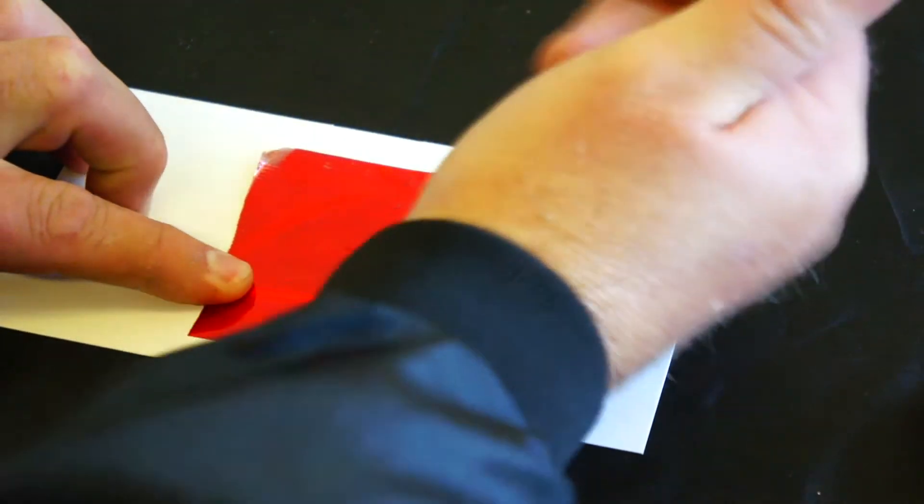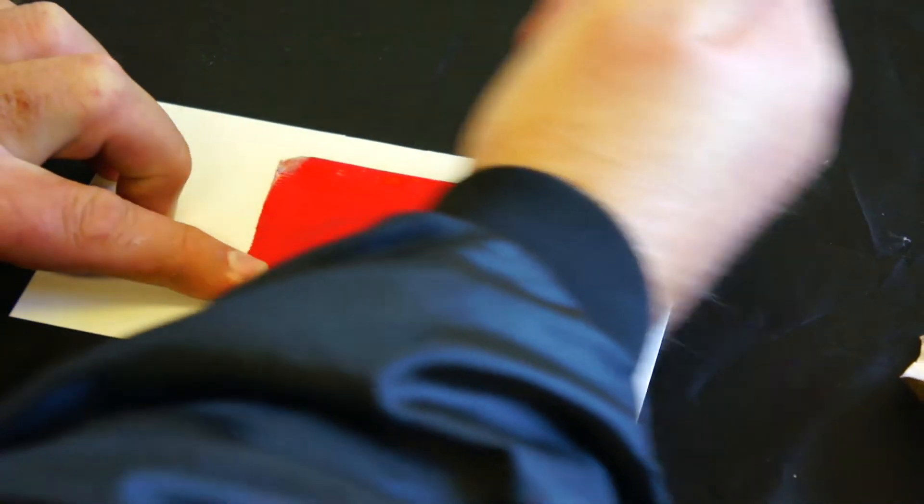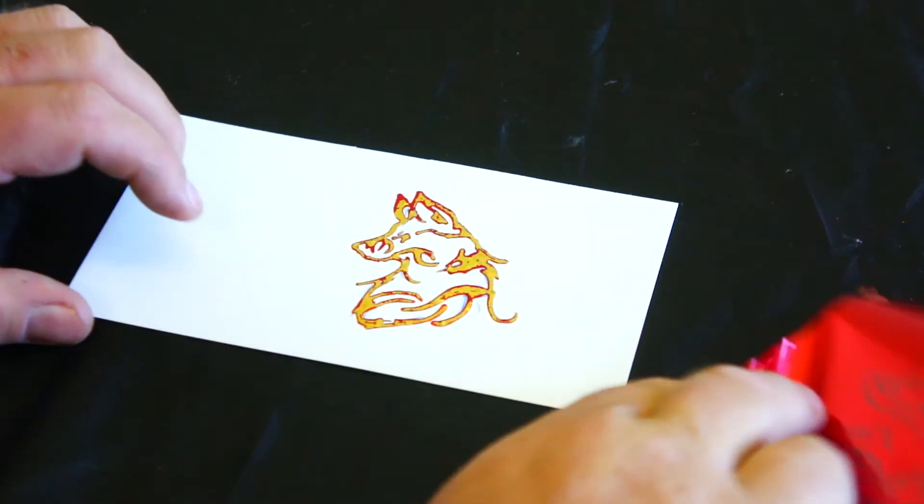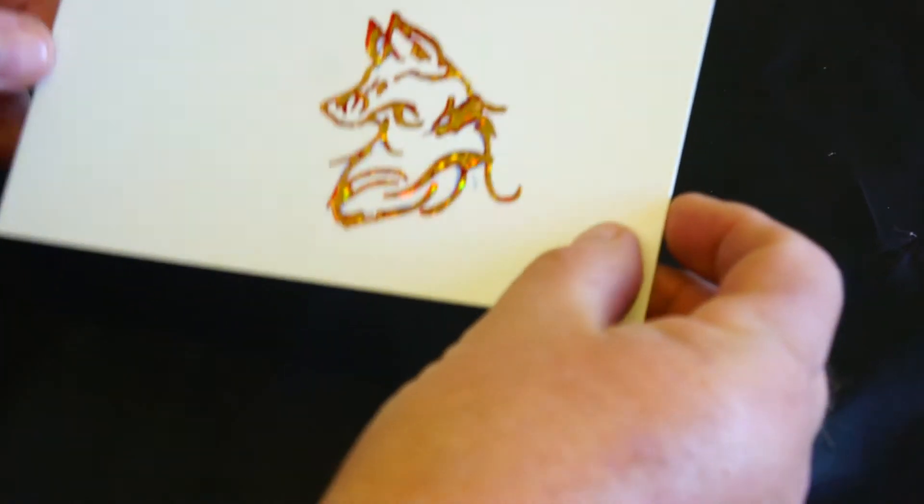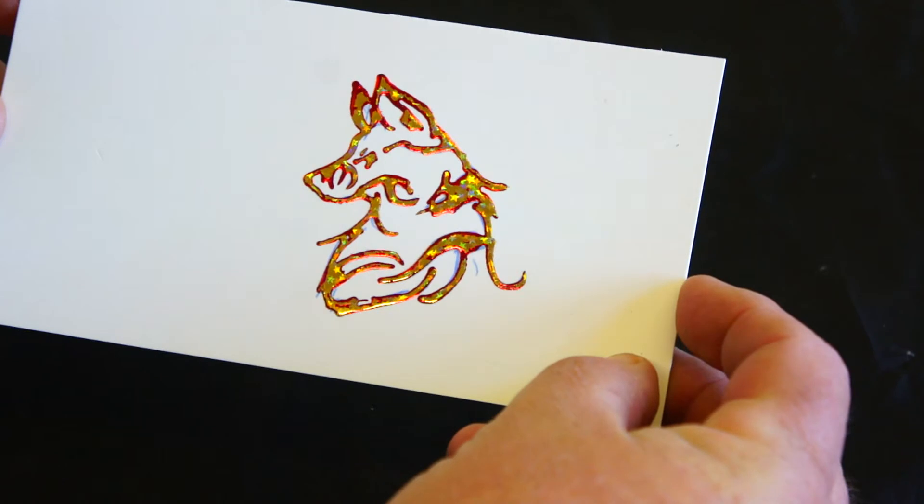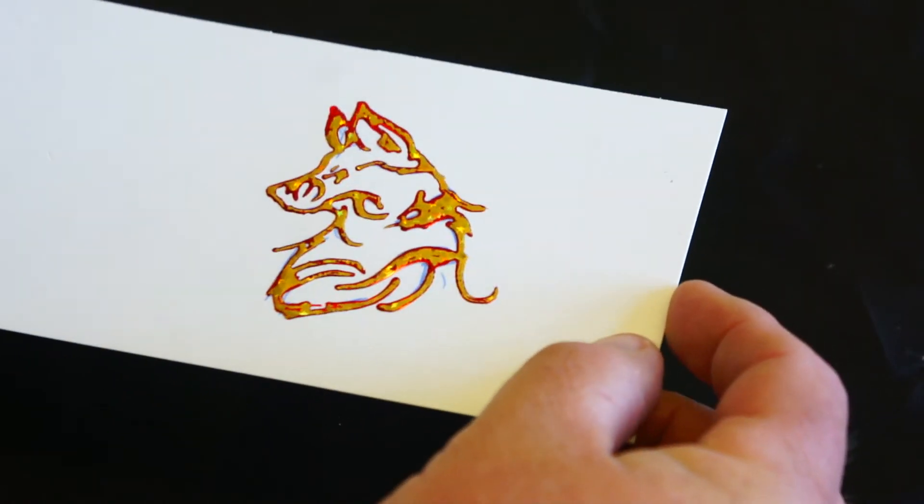Now I put my second color over the top. This time I press firmly, and that will bond that red to the other glue that wasn't covered in gold. There's a really nice two-tone design, red and gold mixed together.